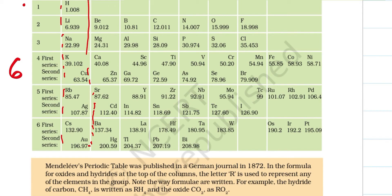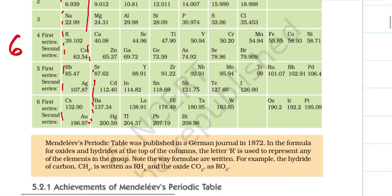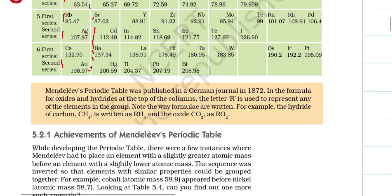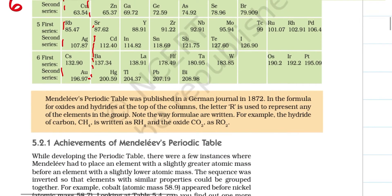Further along: Potassium, Calcium, Scandium, Titanium, Vanadium, Chromium, Manganese, Iron, Cobalt, Nickel, Copper, Zinc, Gallium, Germanium, Arsenic, Antimony, and so on. Mendeleev's periodic table was published in the German journal in 1872.